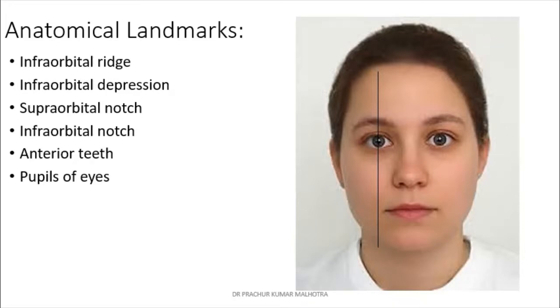The anatomical landmarks for this nerve block include the orbital bridge, the supraorbital notch, the infraorbital notch, the anterior teeth, and the pupils of the eye.